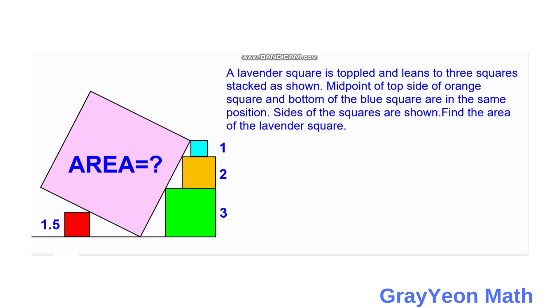Welcome to Grayon Math. A lavender square is toppled and leans to three squares stacked as shown. Midpoint of top side of orange square and bottom of the blue square are in the same position. Sides of the squares are shown. Find the area of the lavender square.